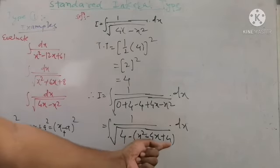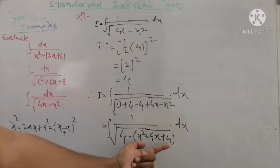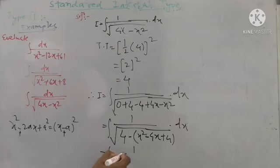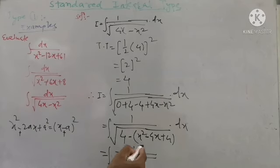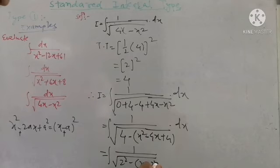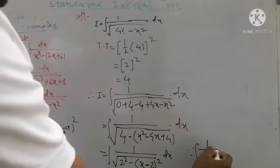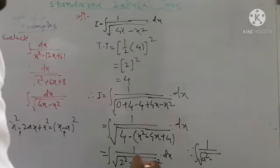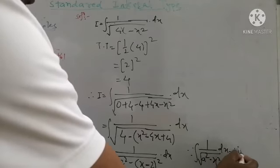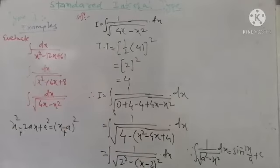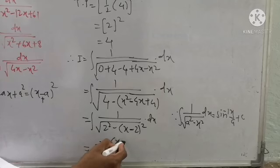Now x² is positive and 4 is positive, so we can convert to a perfect square. The square root of x² is x, the sign is minus, and the square root of 4 is 2, giving (x - 2)². This is of the form a² - x² where a = 2 and x is replaced by (x - 2). The integration of 1 upon root of (a² - x²) is sin⁻¹(x/a) + c, so the answer is sin⁻¹((x - 2)/2) + c.